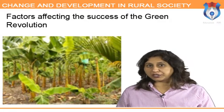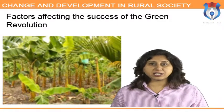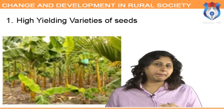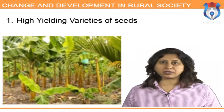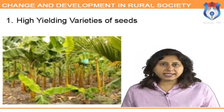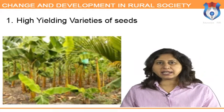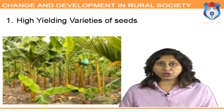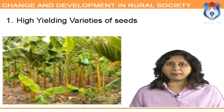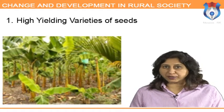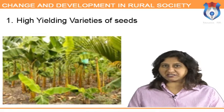The success of the green revolution: high-yielding varieties of seeds were the main scientific aspect of the green revolution. The discovery and use of standard high-yielding variety seeds ensured a higher yield per acre for the farmer and raised agricultural productivity considerably.